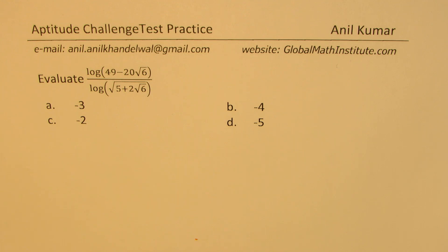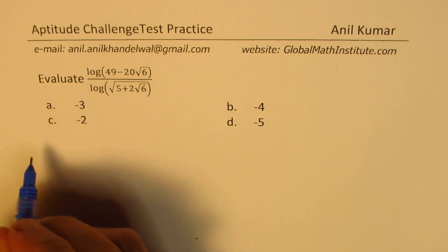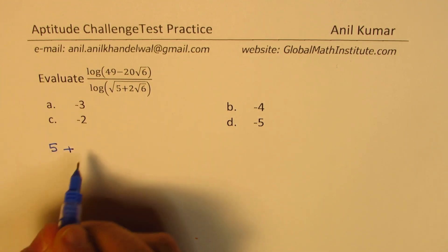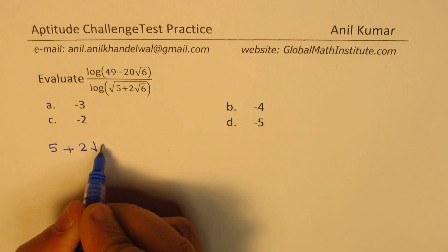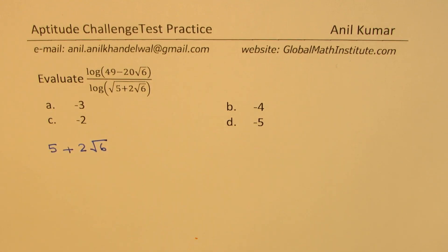Let's try to think about it and see how to solve such a question. There are many things which you need to recall before getting into the solution, so let me go through those things one by one. Let us first try to understand the radical part, which is 5 plus 2 square root 6.